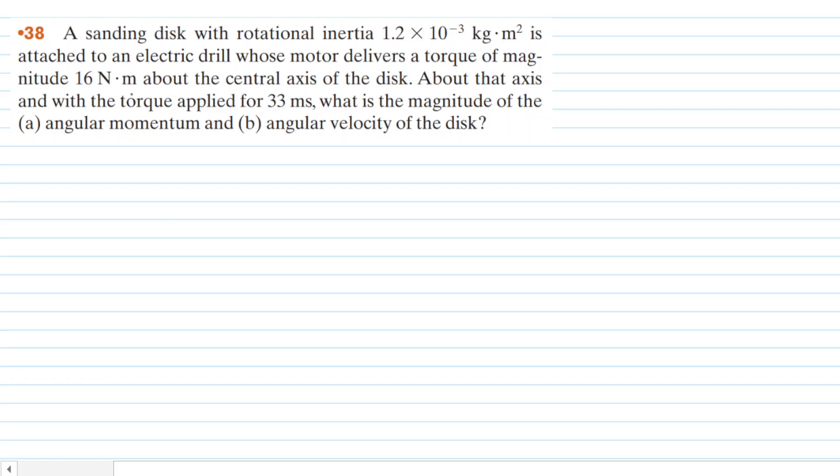Our first step to solving this question is to list the given information. We have a sanding disc whose rotational inertia is given by this quantity here. Rotational inertia is symbolized by uppercase I, so we'll list that information first.